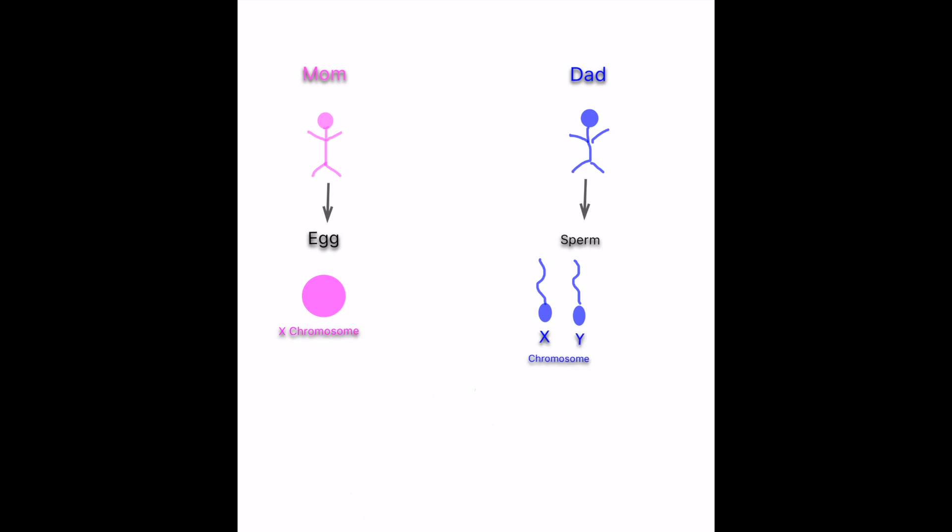Because of this, if a sperm carrying an X chromosome fertilizes the egg, the baby will be a girl. And if it carries a Y chromosome, the baby will be a boy. This is the reason why there are sex-linked disorders in humans too.